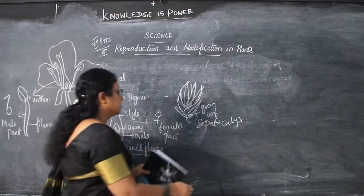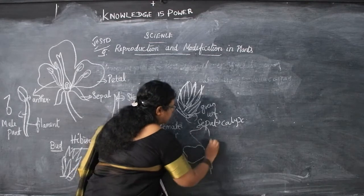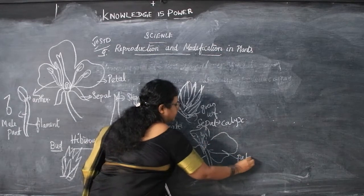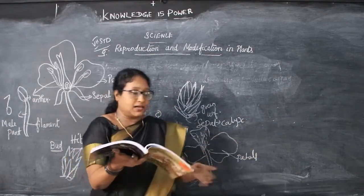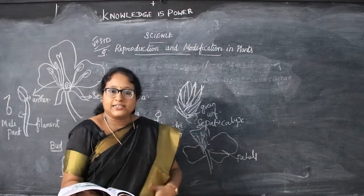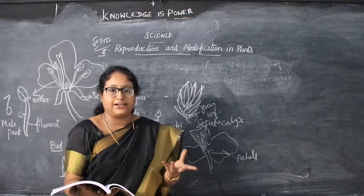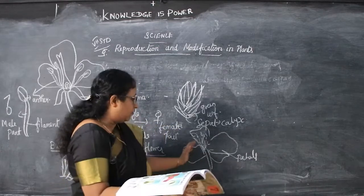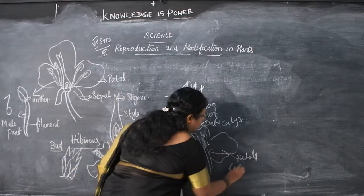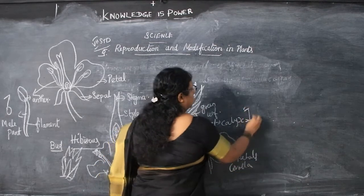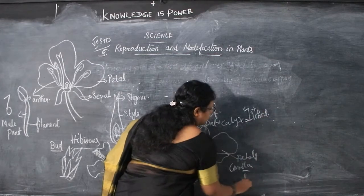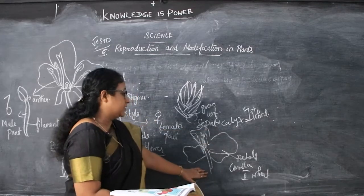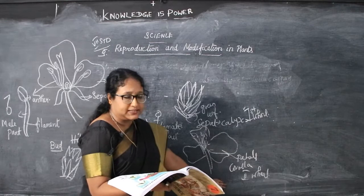Next are the petals. In the open flower, petals are the largest part and they are attractive and brightly coloured. Sometimes they are sweet-scented and attract insects. The ring of petals together is called the corolla.